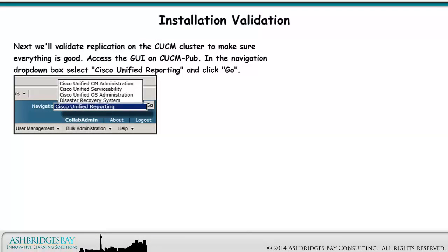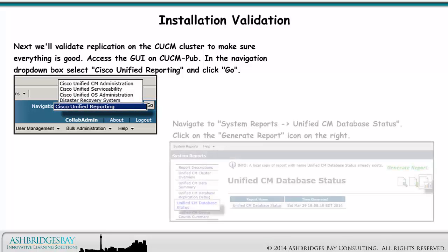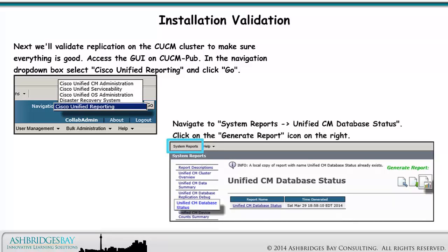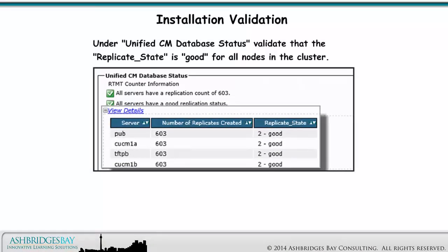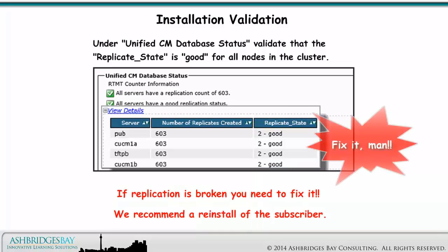Next, we'll validate replication on the CUCM cluster to make sure everything is good. Access the GUI on CUCM Pub. In the Navigation drop-down box, select Cisco Unified Reporting and click Go. Navigate to System Reports > Unified CM Database Status. Click on the Generate Report icon on the right. Validate that the Replicate state is good for all nodes in the cluster. If replication is broken, you need to fix it — we recommend a re-install of the subscriber.